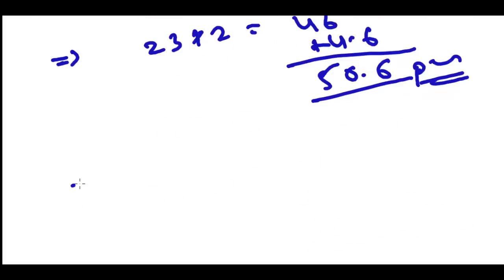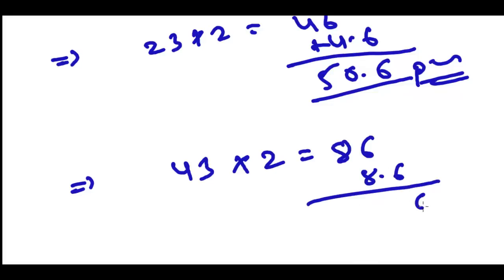And let me do one more. Let's say I want to convert 43. So 43 times 2, it's going to be 86, and then 8.6, and then it's going to be 6 and 8 plus 6, that is 14 and 1, so it's going to be 94.6 pounds.